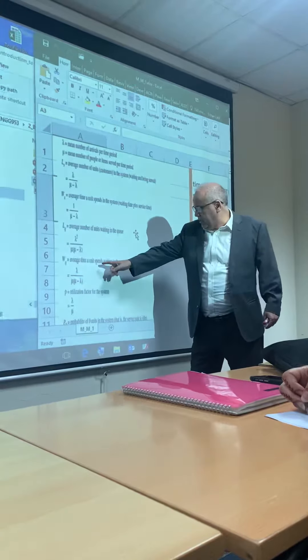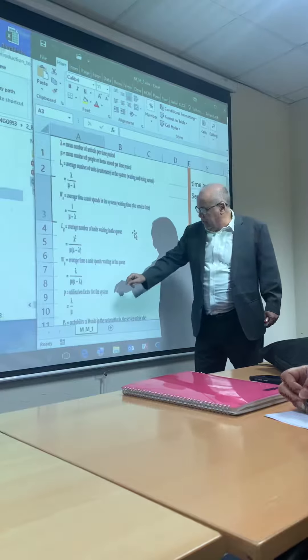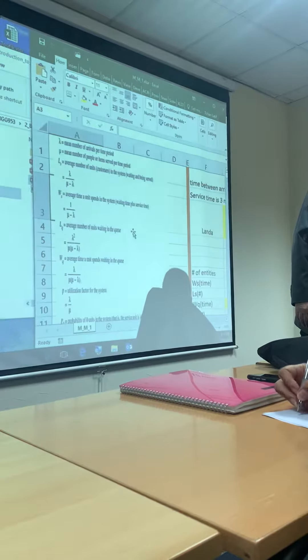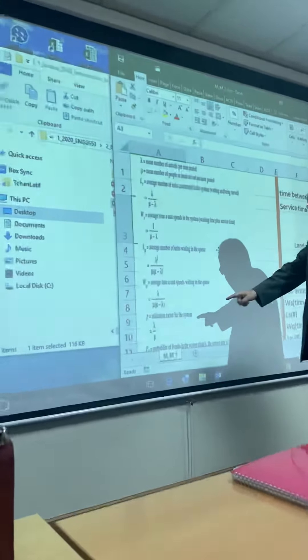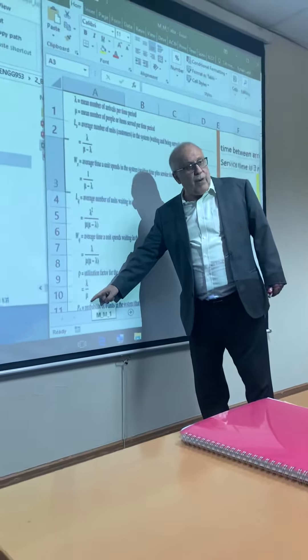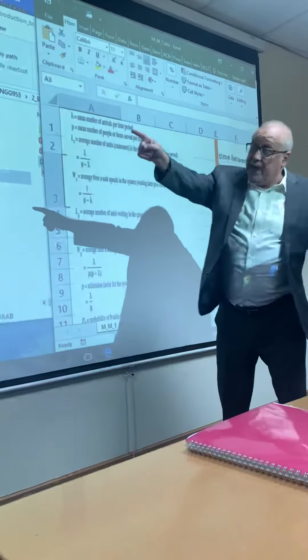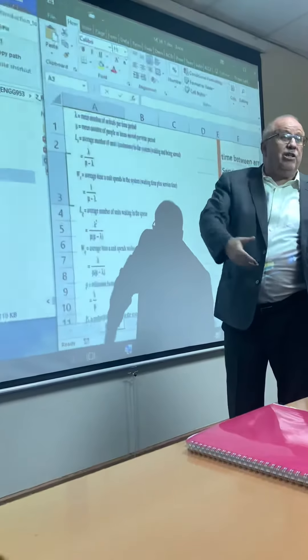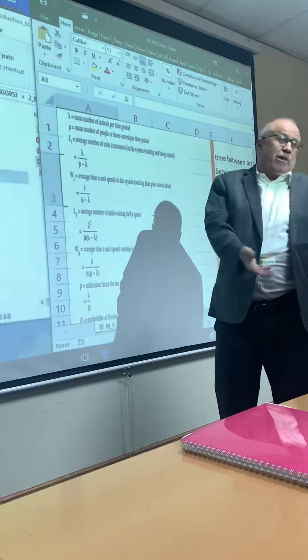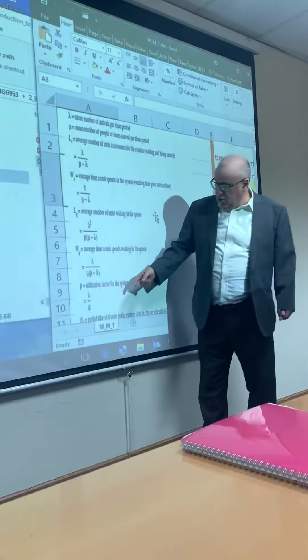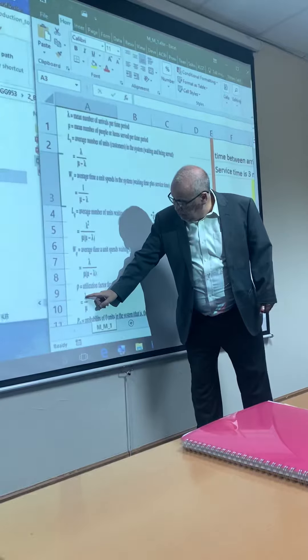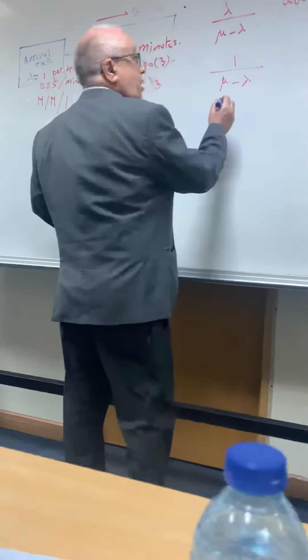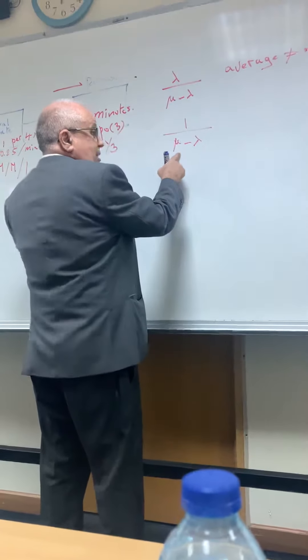And another: what is the average time a unit spends? We did the utilization of the service, which can be 100 percent maximum. So what does it give you? Lambda over mu. Did you see when I put the example? I told you that would not be right because you will have utilizations beyond one, beyond 100 percent, which is not possible. So always, lambda should be smaller than mu.